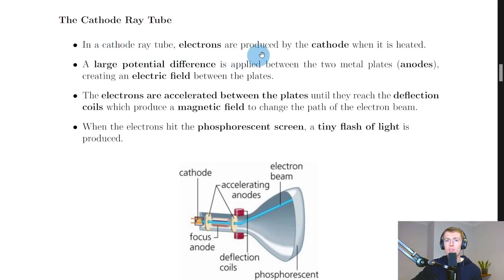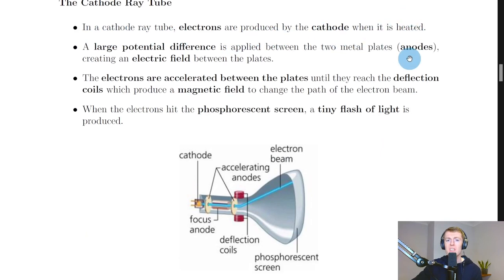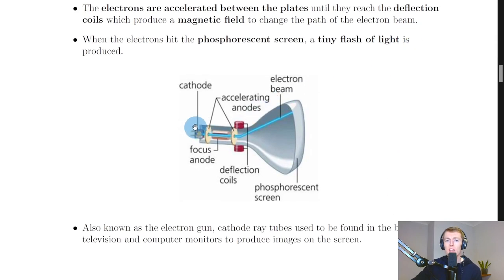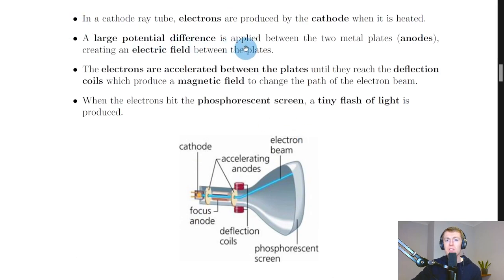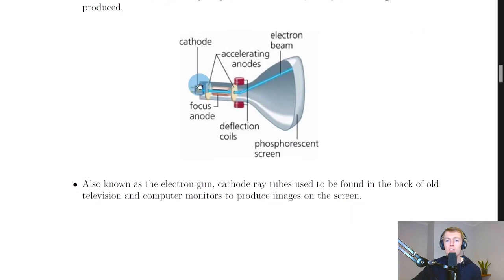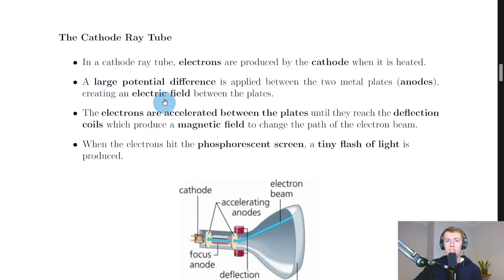In a cathode ray tube, electrons are produced by the cathode when it is heated. The cathode is on the left hand side. A large potential difference is applied between the two metal plates, the anodes. There's your two anodes there—the accelerating anodes—and this creates an electric field between the plates.